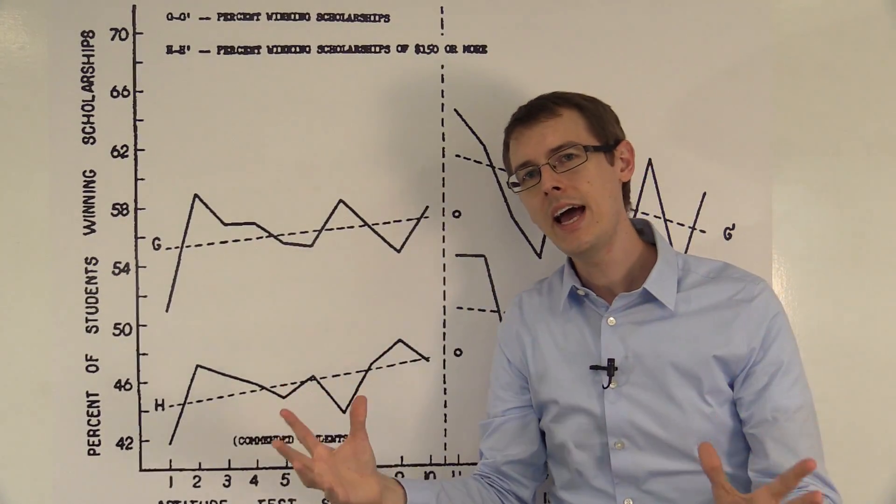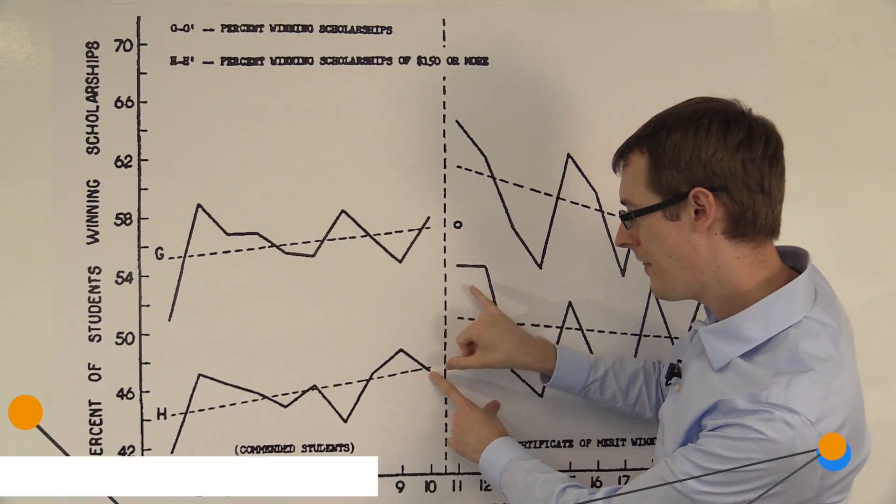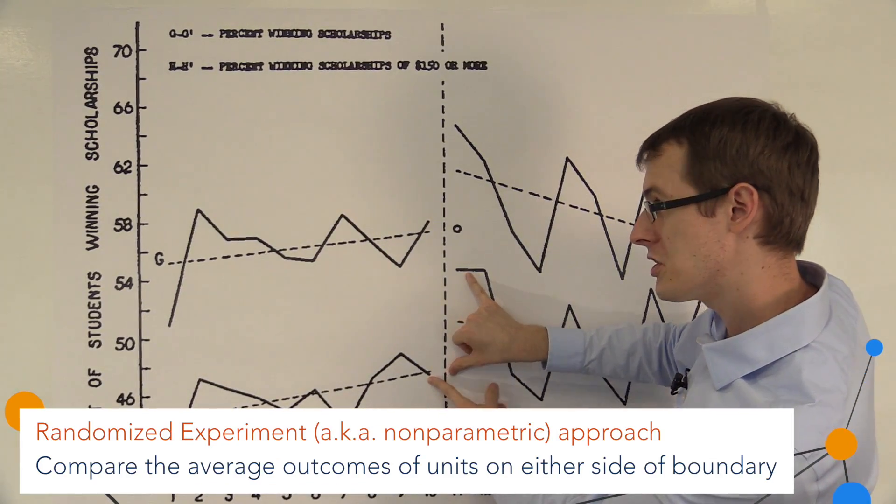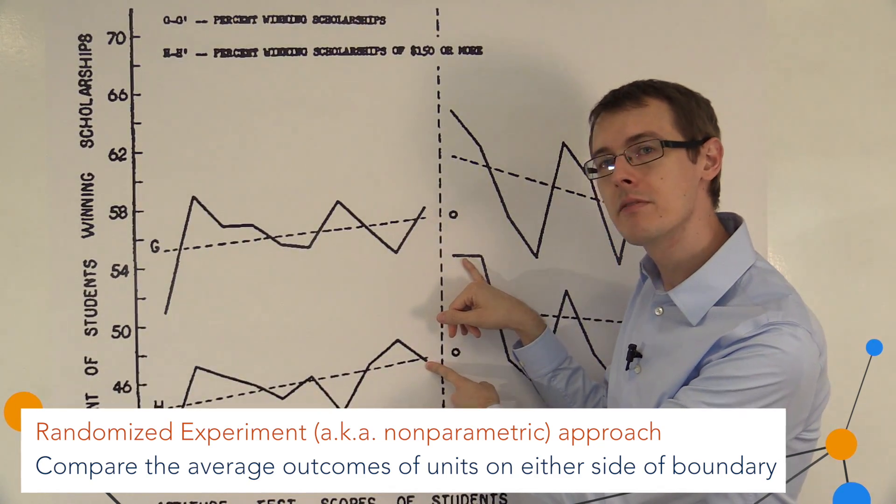So by analogy to randomized experiments, we compare this number with this number. And the difference here, which is about 10% or so, that's our estimate of the treatment effect.